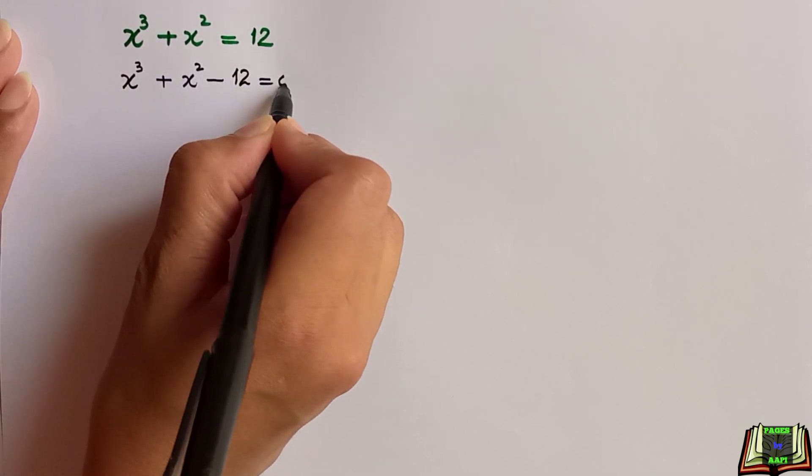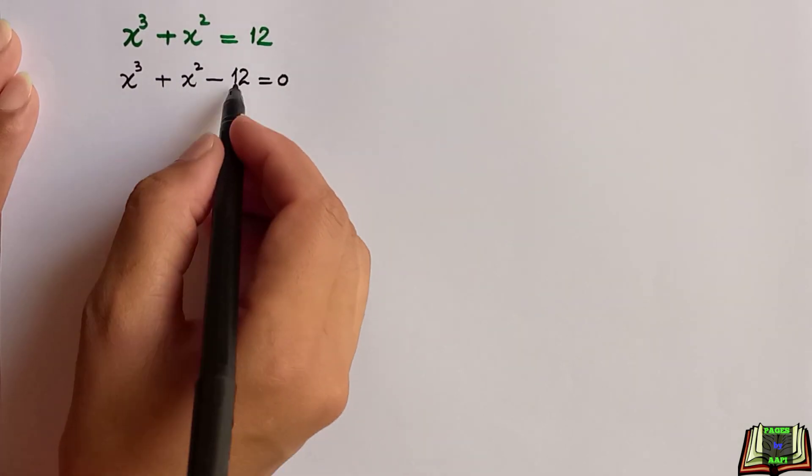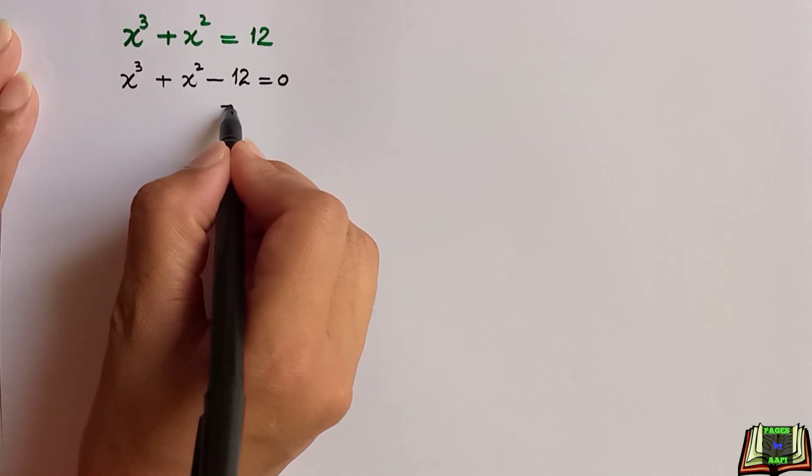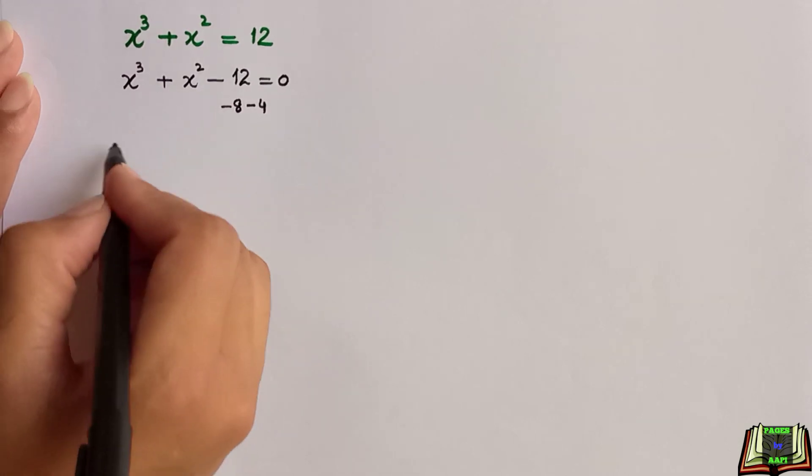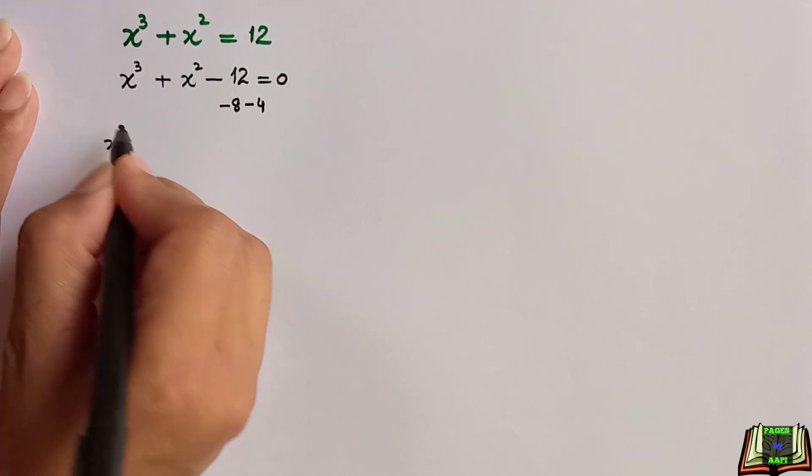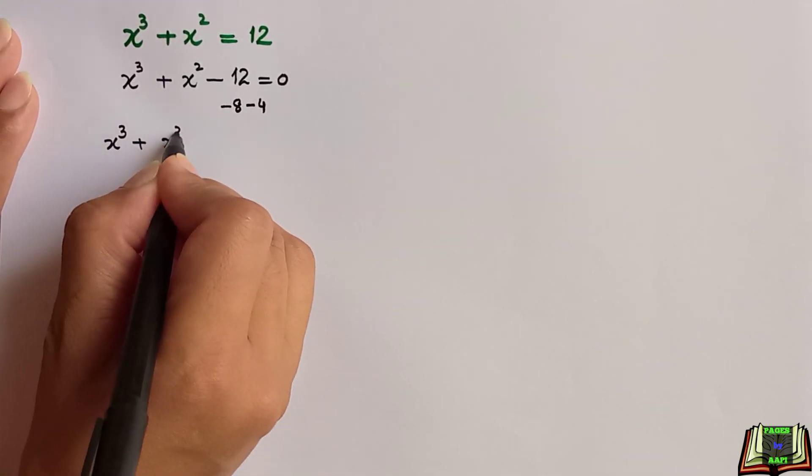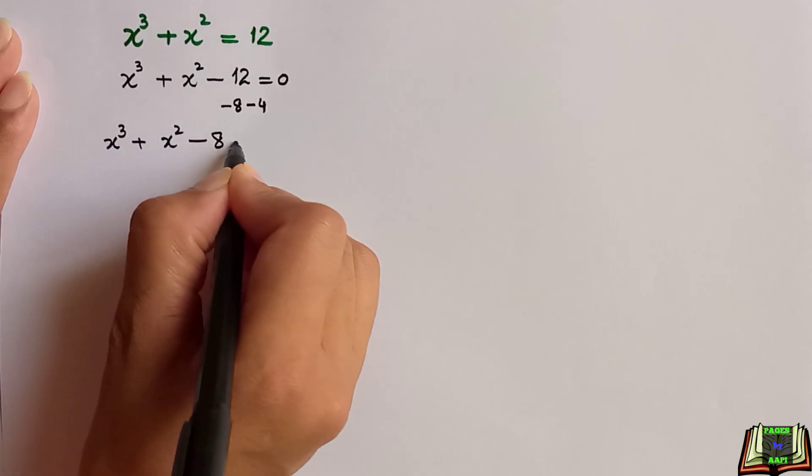Now we know that minus 12 is the same as minus 8 minus 4. So we can write this equation as x cube plus x square minus 8 minus 4.